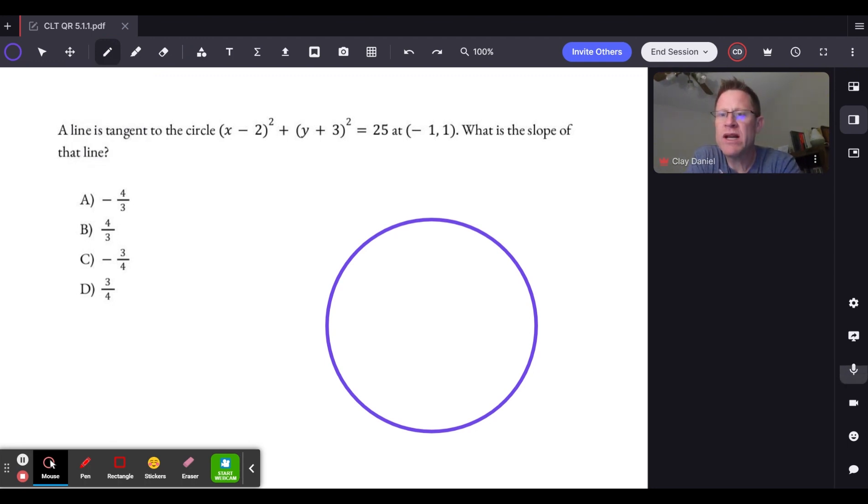The first important element—let me read it: A line is tangent to the circle (x minus 2) squared plus (y plus 3) squared equals 25 at the point negative 1 comma 1, and what is the slope of that line?